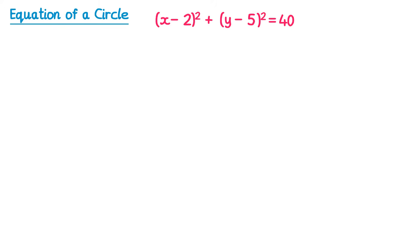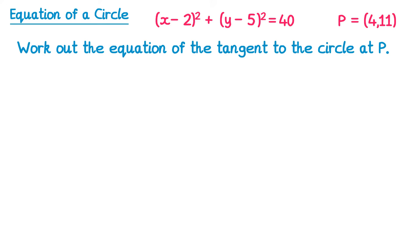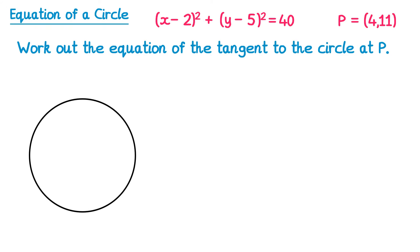If you're given the equation of a circle and a point on the circle, you need to be able to find the equation of the tangent to the circle at that point. This applies to circles of this form rather than just x squared plus y squared equals r squared. We can find the center of this circle from the equation — we've got negative 2 and negative 5, so the center is at (2, 5). We're also told point P is on the circle. To find the equation of a tangent you need the gradient of the tangent and a point on the tangent — point P is at (4, 11).